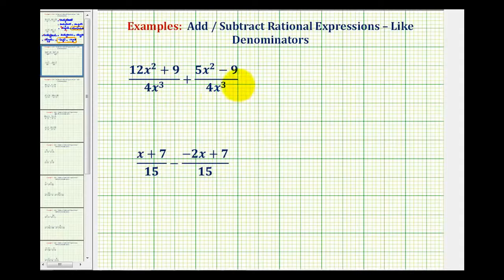Now we'll take a look at two more examples of adding rational expressions with like denominators. Since the denominators are the same, to add or subtract the rational expressions, we add or subtract the numerators and the denominator stays the same.